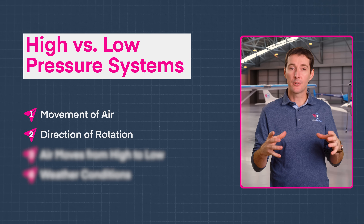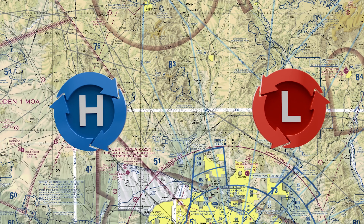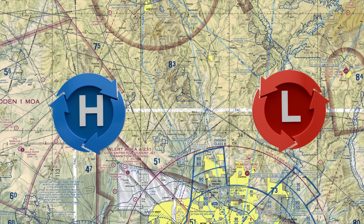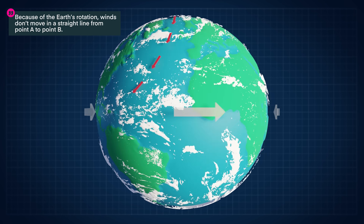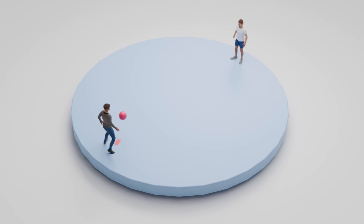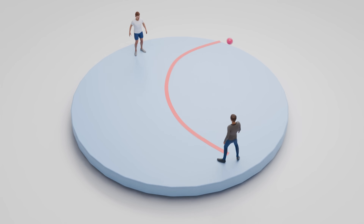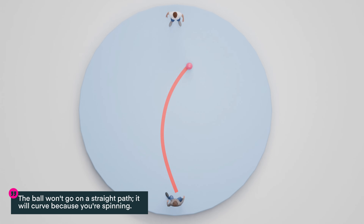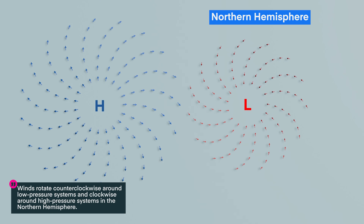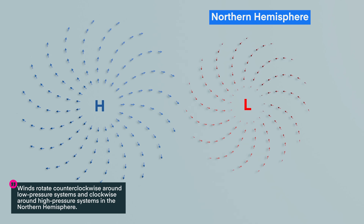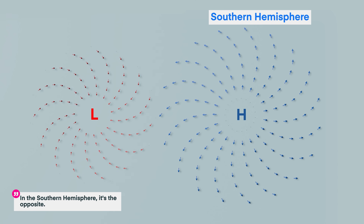Difference number two is the direction of rotation. The wind actually rotates around both low pressure and high pressure systems. Why? It's because of something called the Coriolis effect. Because of the Earth's rotation, winds don't move in a straight line from point A to point B. Imagine throwing a ball to someone on the other side of a merry-go-round — the ball won't go straight to them; it will curve because you're spinning. That's what happens to wind on our very own spinning merry-go-round, the Earth. Because of this, wind rotates counterclockwise around low pressure systems and clockwise around high pressure systems in the Northern Hemisphere. In the Southern Hemisphere, it's the opposite.